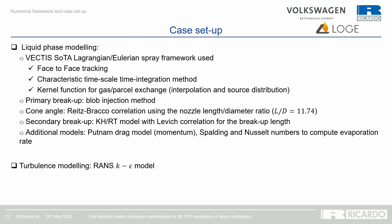The liquid phase is modeled using the Vectis state-of-the-art Lagrangian-Eulerian spray, where face-to-face tracking is used for parcel motion and kernel functions are used for gas-parcel exchange. The primary breakup is modeled using the blob injection method, while the cone angle is modeled using the Reitz-Bracco correlation. The secondary breakup is modeled using the Kelvin-Helmholtz Rayleigh-Taylor model with the Levich correlation for the breakup length. Additional models for drag and evaporation of droplets are also used, and turbulence is modeled within the RANS framework using the K-Epsilon model.